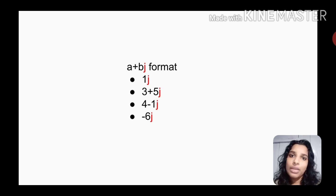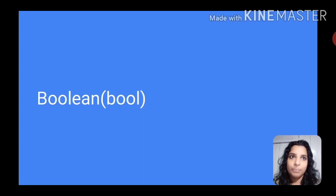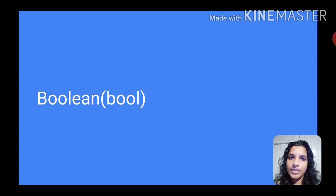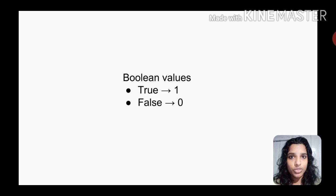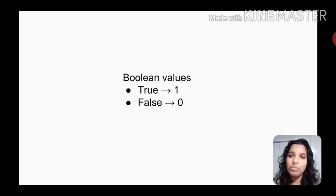Now we have a boolean data type. The boolean data type — a boolean name. We can write this. If you look at the boolean, we can write the whole computer world with two numbers: 1 and 0, that is true or false. There are 2 chances. That is the boolean values.